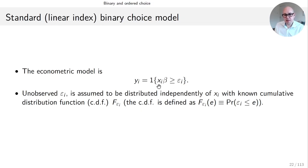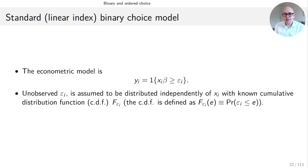Here x_i is a vector of explanatory variables, beta is a parameter vector that we would like to estimate, and epsilon_i can be thought of as individual heterogeneity that is unobserved. The unobserved epsilon is assumed to be distributed independently of x_i. Since we're going to do maximum likelihood estimation, it's not surprising that we assume we know the cumulative distribution function of epsilon_i. The CDF evaluated at e is the probability that the random variable epsilon_i is less than or equal to e.